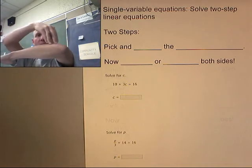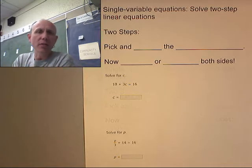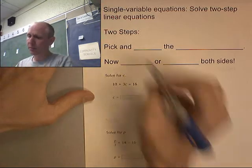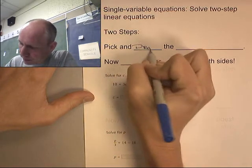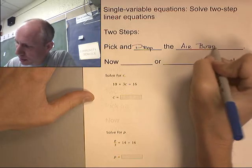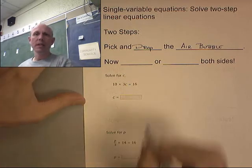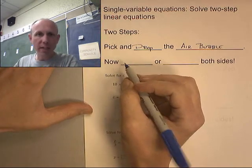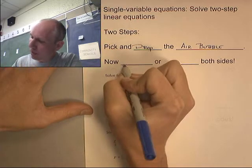The main thing we're going to be doing is usually drop, and then either dividing or multiplying. So two steps: pick and drop the air bubbles. Now after you've done a pick and drop, you're ready to either multiply or divide both sides.